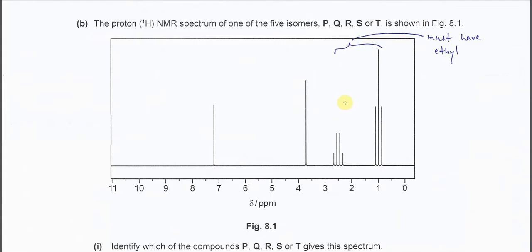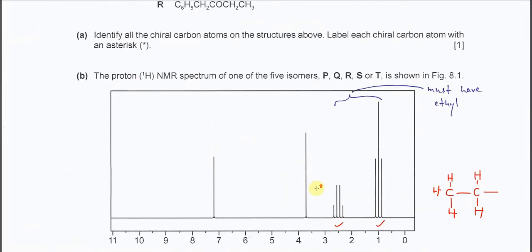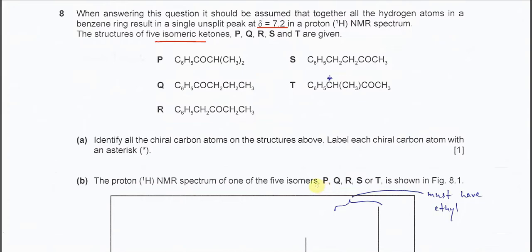From the spectrum, there is a very obvious hint: whenever you see a triplet and a quartet, this tells you the structure most likely has an ethyl group — CH3CH2. The ethyl group produces these two signals. The CH3 protons couple with the two CH2 protons to form the triplet, and the CH2 protons couple with the three CH3 protons to form the quartet. So whenever you see triplet and quartet, there is an ethyl group. Therefore the compound is R, because only R has the ethyl group.